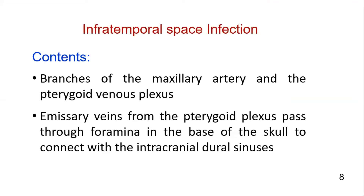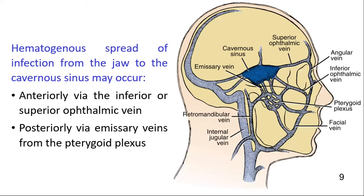Vital structures within the space include, but are not limited to, the branches of the internal maxillary artery and pterygoid venous plexus. The pterygoid venous plexus has clinical significance. It is unique in that it provides emissary veins that travel through foramina in the base of the skull and connect with the intracranial dural sinuses.